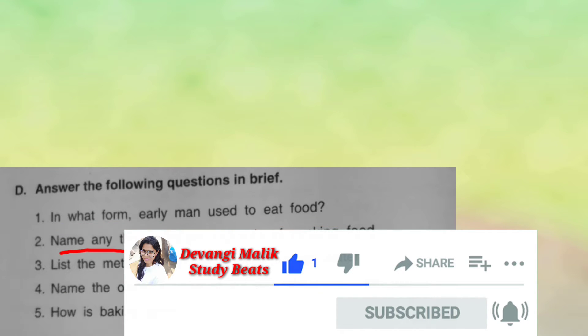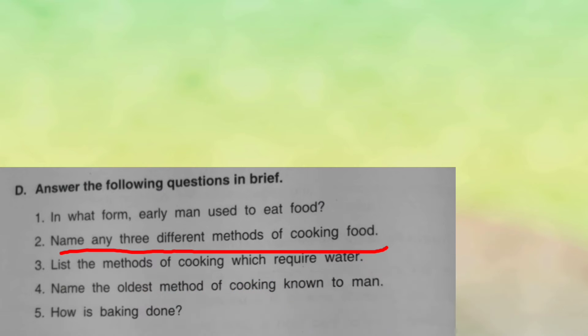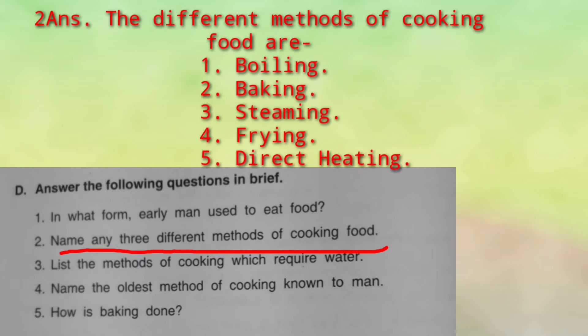Next question: name any 3 different methods of cooking food. The 3 different methods of cooking food are boiling, steaming, baking, frying, and direct heating.